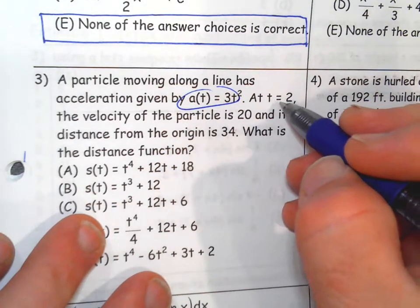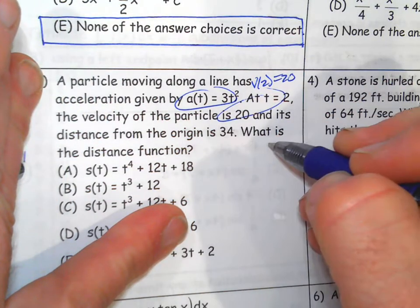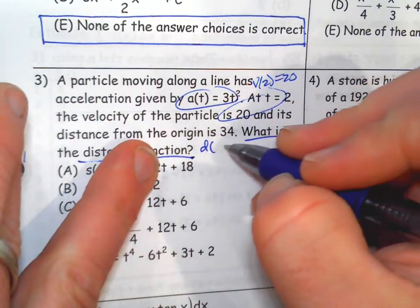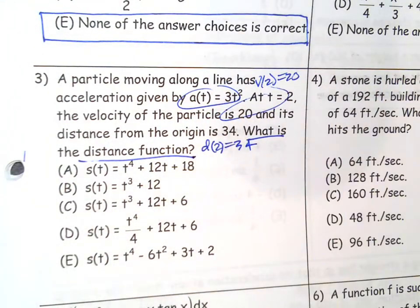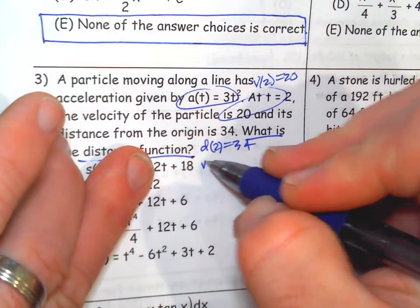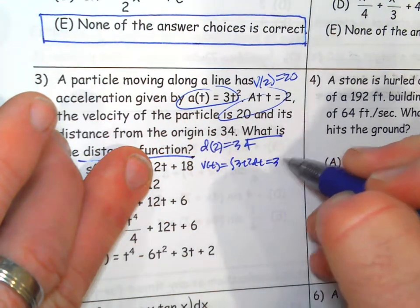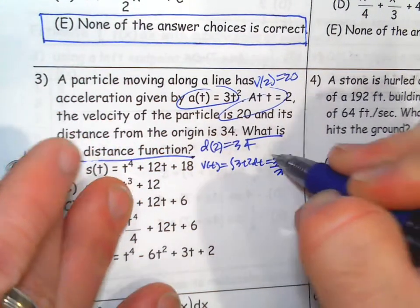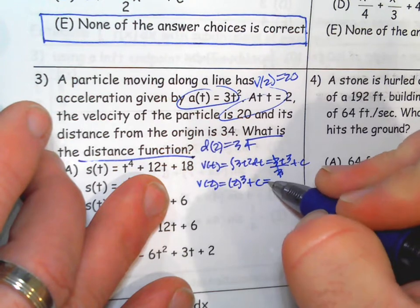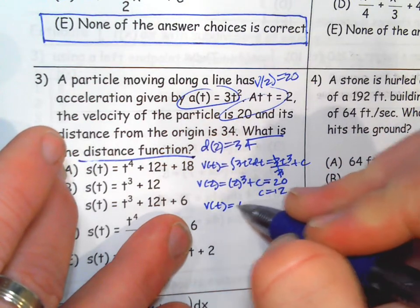Particle moving along the line, acceleration. Time 2, velocity is 20, so that's V(2) equals 20. Distance from the origin is 34. What is the distance function? So it's distance at time 2 equals 34. So I'm thinking kind of like a position function, I guess, right? There's a bunch of positions. So I guess we need to work backwards to get velocity. We need to integrate 3t squared. So that's going to be 3t cubed over 3 plus C.